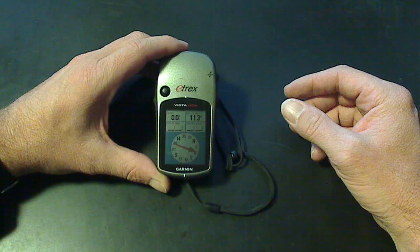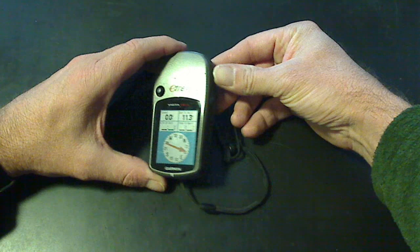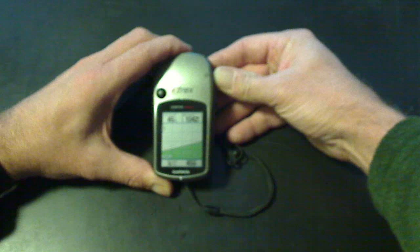Let's take a look at the Etrex Vista HCX Garmin GPS in a little bit more detail. There are four main pages to it. We learned in the last video that this button up here allows us to page through the pages.